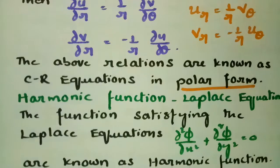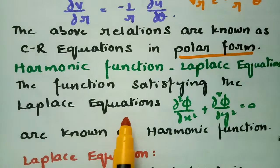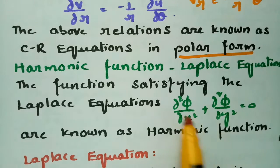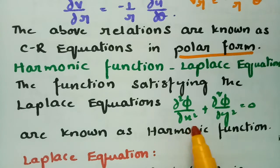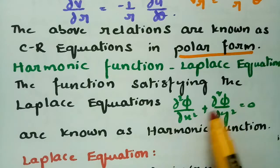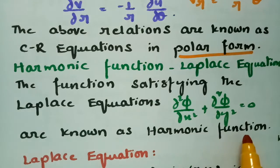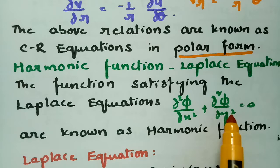Next, coming to the harmonic function and Laplace equations. The function satisfying the Laplace equations is called a harmonic function. If we take the double derivative with respect to x and the double derivative with respect to y and add them up, we get 0 — then the function is said to be a harmonic function.